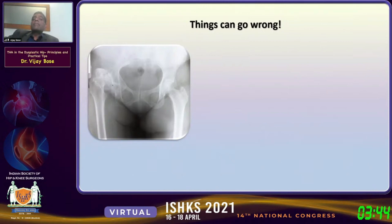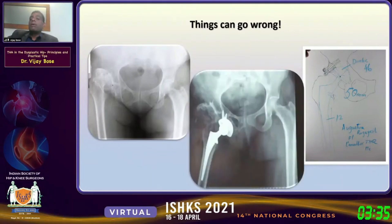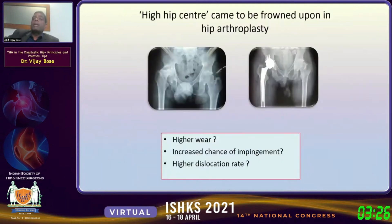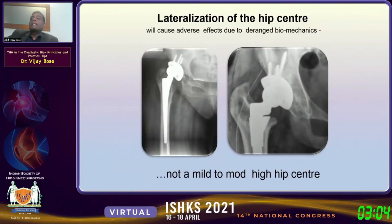Here is a case referred to our unit where the surgeon correctly followed the principle of placing the cup at the native center, but it went very inferior, and unfortunately the patient ended up with a hindquarter amputation. High hip center came to be frowned upon because of perceived higher wear, increased impingement, and higher dislocation rate. However, Bill Harris was the first to say that's not true — using cementless fixation, he published excellent results. Tanzer, Bobak, and Kobayashi also published excellent results with high hip centers.